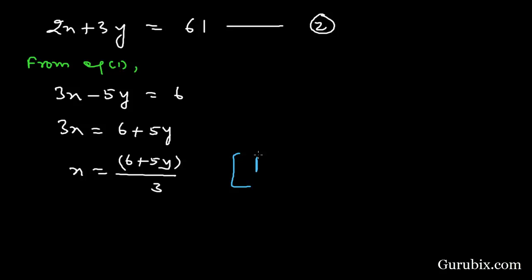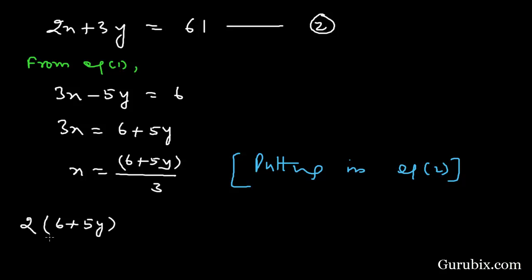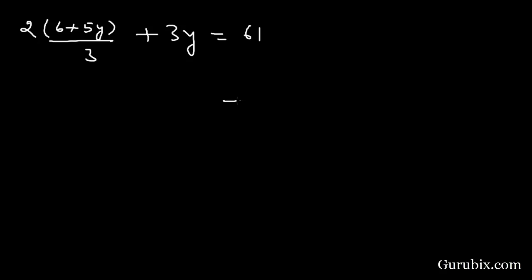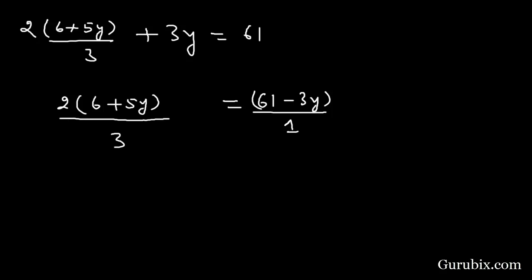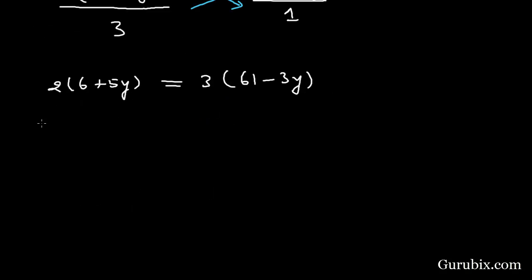Substituting into equation 2: 2 × (6 + 5y)/3 + 3y = 61. Rearranging, we get 2(6 + 5y)/3 = 61 − 3y. Cross-multiplying gives 2(6 + 5y) = 3(61 − 3y).